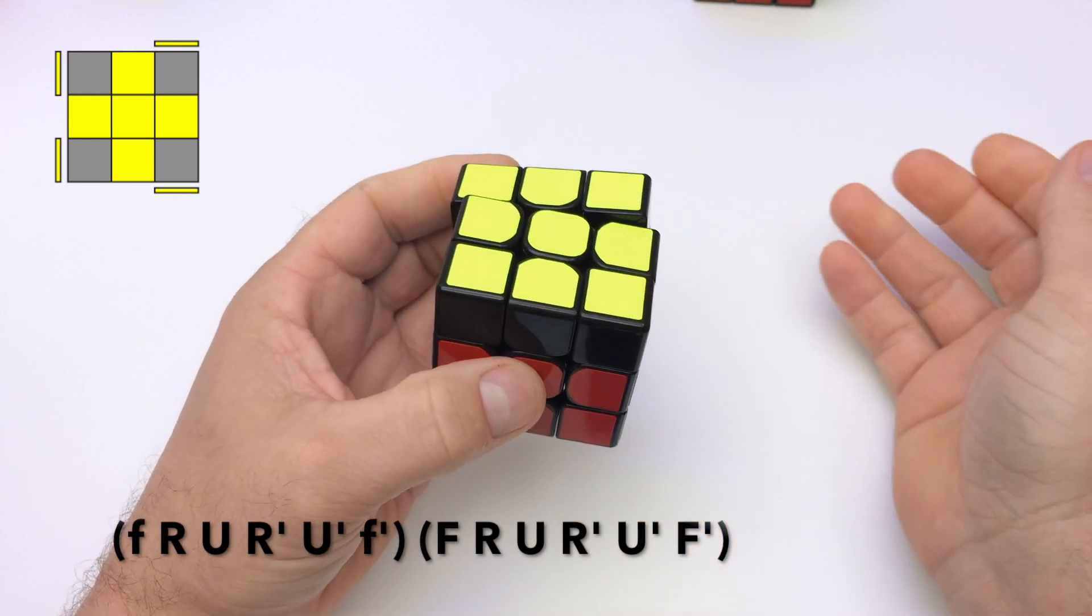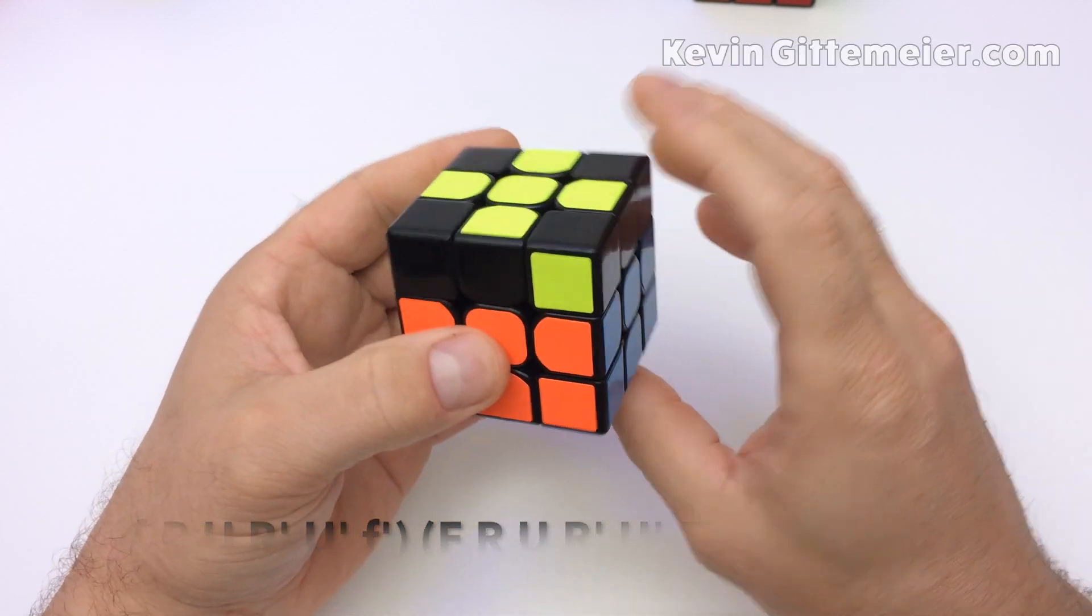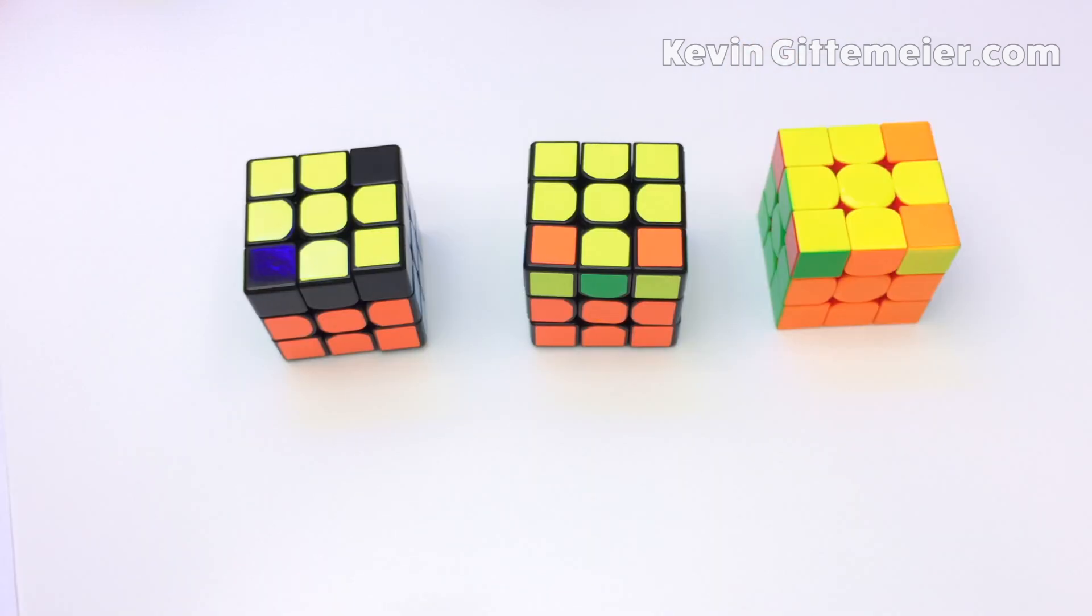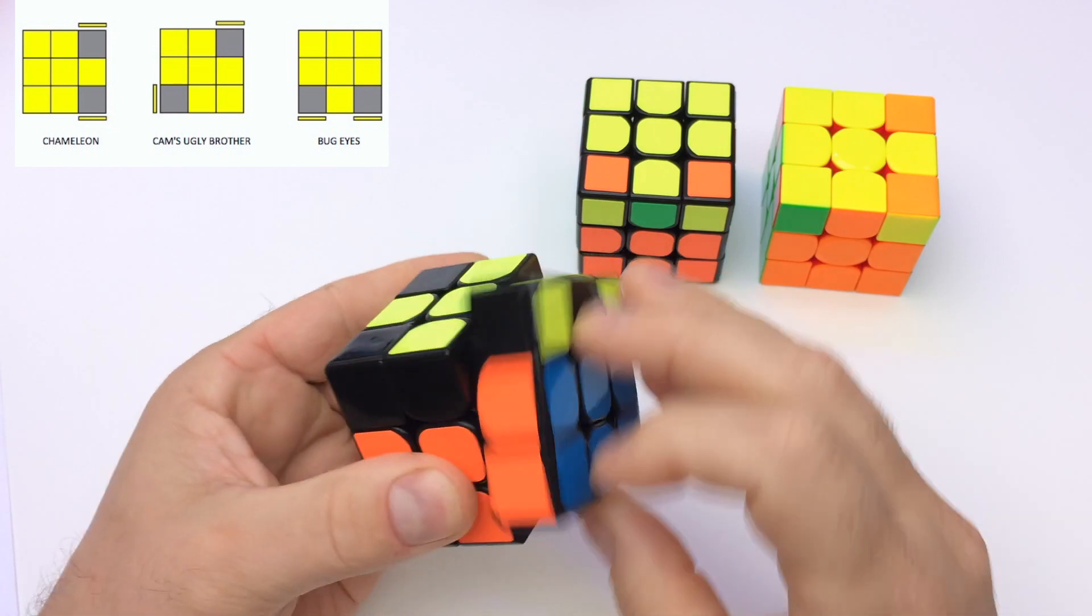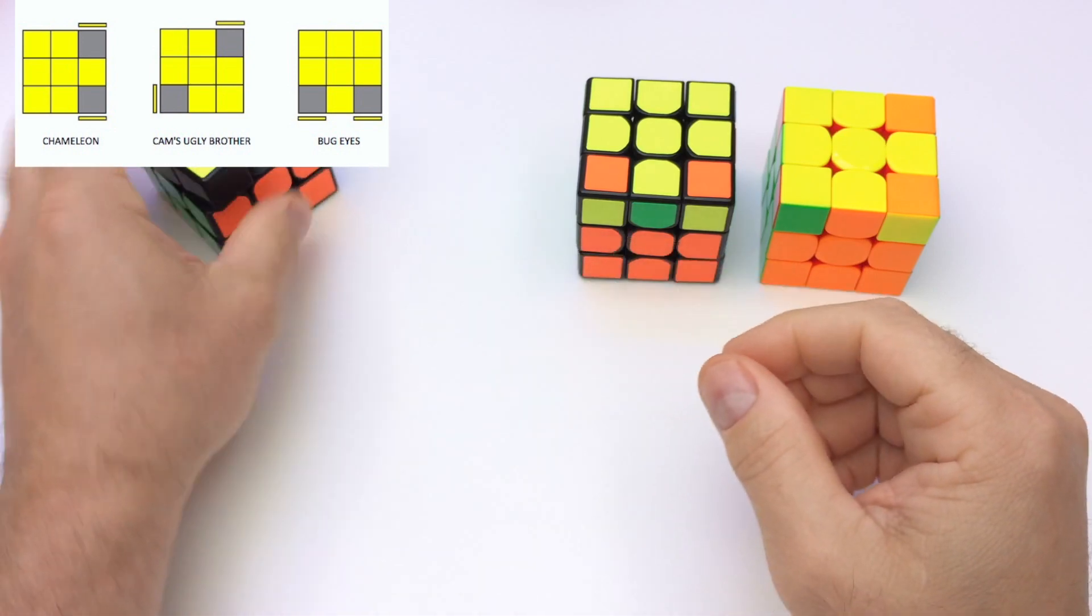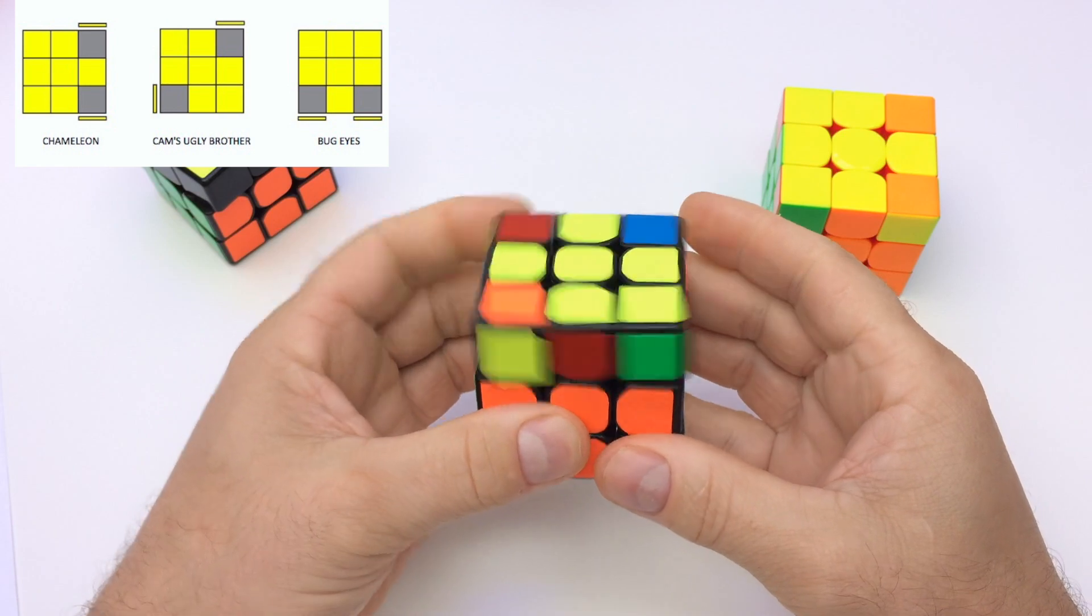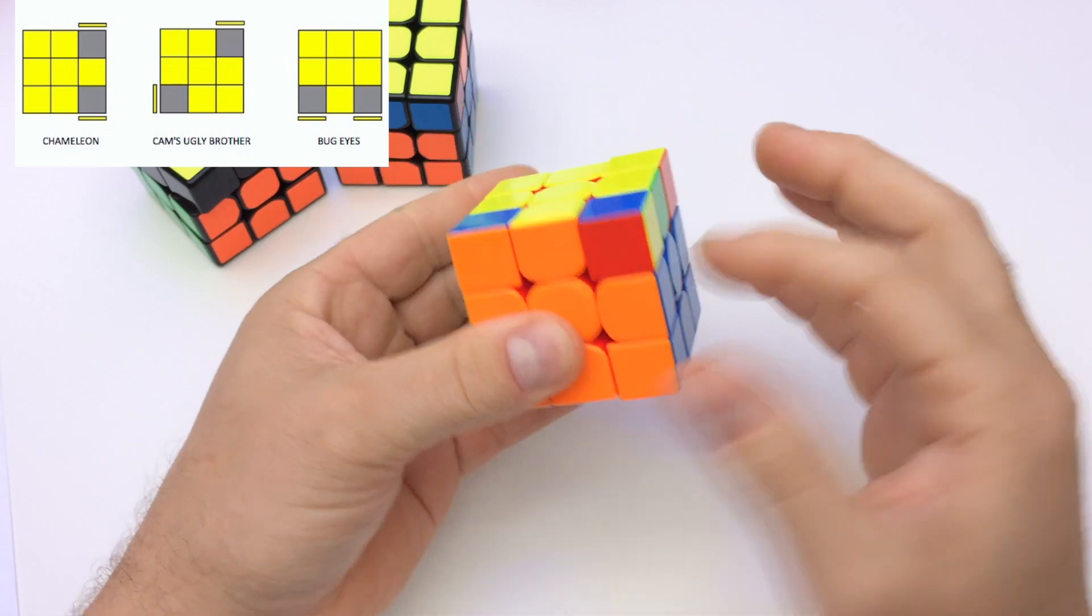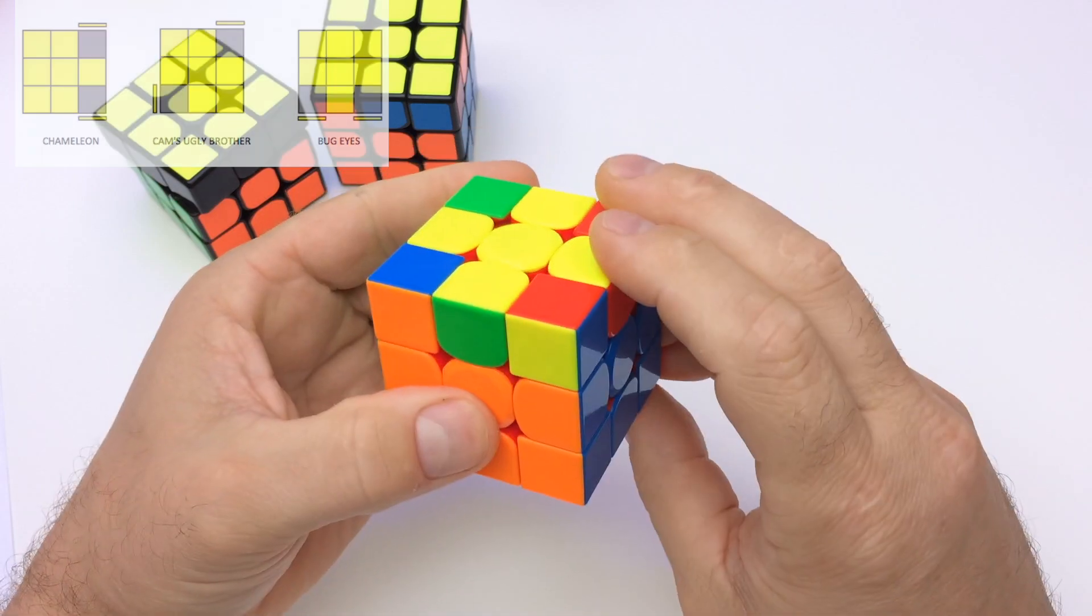That's pretty easy to memorize because it's basically the same exact algorithm you just have to learn when to apply it. So if we get one of the three patterns that we don't know just perform little fish until you get one that you do know. So this one just became double fish, this one just became big fish, and sometimes when you perform little fish you still don't have one you know just do it again.